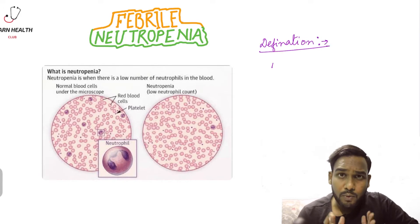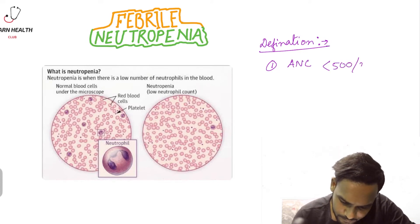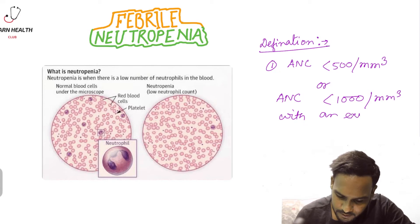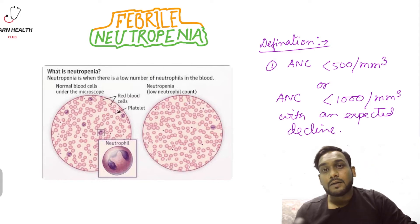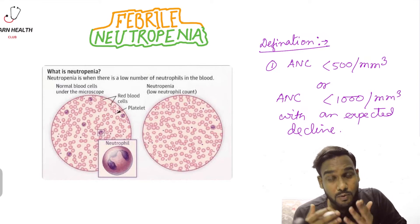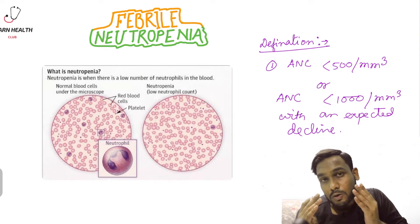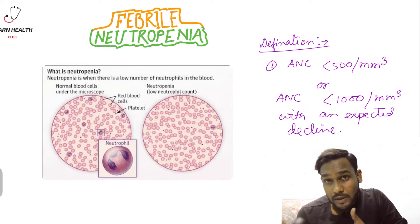We say febrile neutropenia when the child meets the following criteria: number one, absolute neutrophil count less than 500 per millimeter cube, or absolute neutrophil count less than 1000 per millimeter cube with an expected decline. The child should also be suffering from fever — defined as a single oral or axillary temperature more than 101°F, or two consecutive temperatures of 100.4°F at least twelve hours apart.